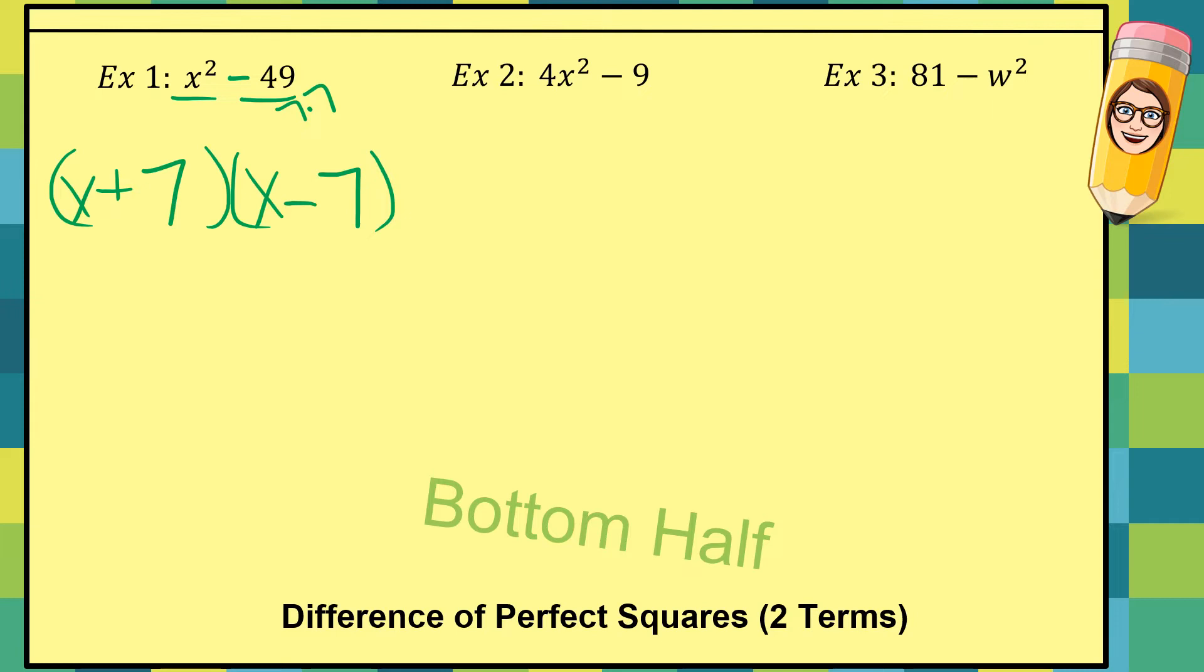Now let's take a look at example two. Step one, GCF. I don't have one. Step two, do I have two terms? Yes. Are they both perfect squares? Yes, yes, yes. And do I have a subtraction sign? Yes. Let's set up our two parentheses. Now be careful here. We know it's going to remain a plus and a minus. But notice it says four x squared. Four is a perfect square because of two times two. X squared is a perfect square because of x times x. Nine is a perfect square because of three times three. So you're going to have the same binomial with just opposite signs.